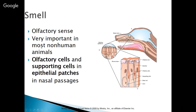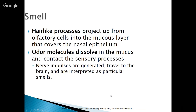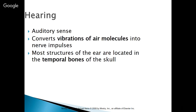Smell is an olfactory sense. It is very important in most non-human animals — this is the way that dogs see the world. There are olfactory cells and supporting cells in epithelial patches in the nasal passages — this is olfactory epithelium. They contain nerve cells with olfactory cilia and supporting cells, and there's a mucus layer that protects those cilia. Hair-like processes project up from the olfactory cells into the mucus layer. Odor molecules dissolve in the mucus, contact the sensory processes, and nerve impulses are generated and travel to the brain where they are interpreted as particular smells.